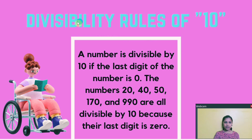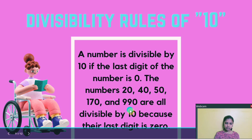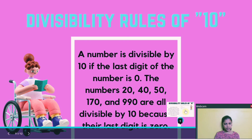Now, the last divisibility rule — divisibility rules of 10. A number is divisible by 10 if the last digit of the number is 0. The numbers 20, 40, 50, 170, and 990 are all divisible by 10 because the last digit is 0.